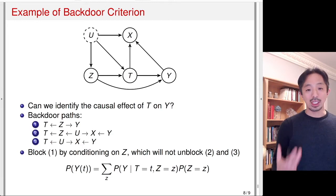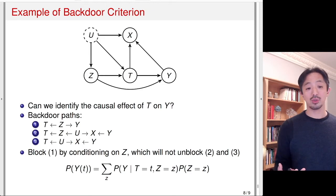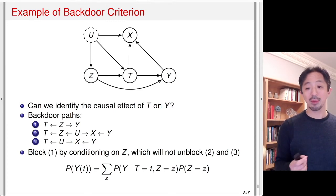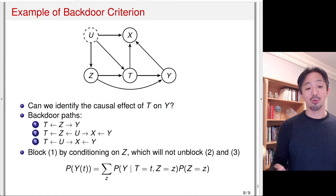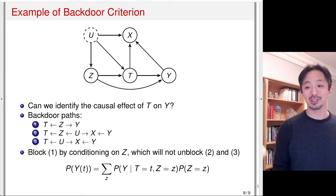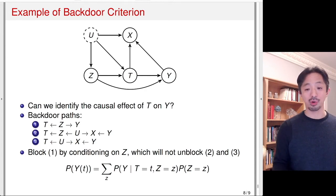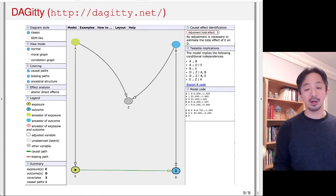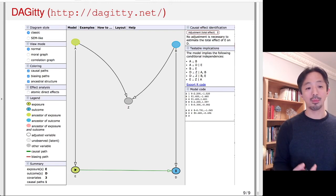D-separation and the backdoor criterion allow you to check each path once you write down a graph, and this can be done by computer. Instead of checking paths one by one manually, the computer can check this automatically, quickly, and accurately. In fact, there is software called DAGitty — it also has an R package — that allows you to do that.